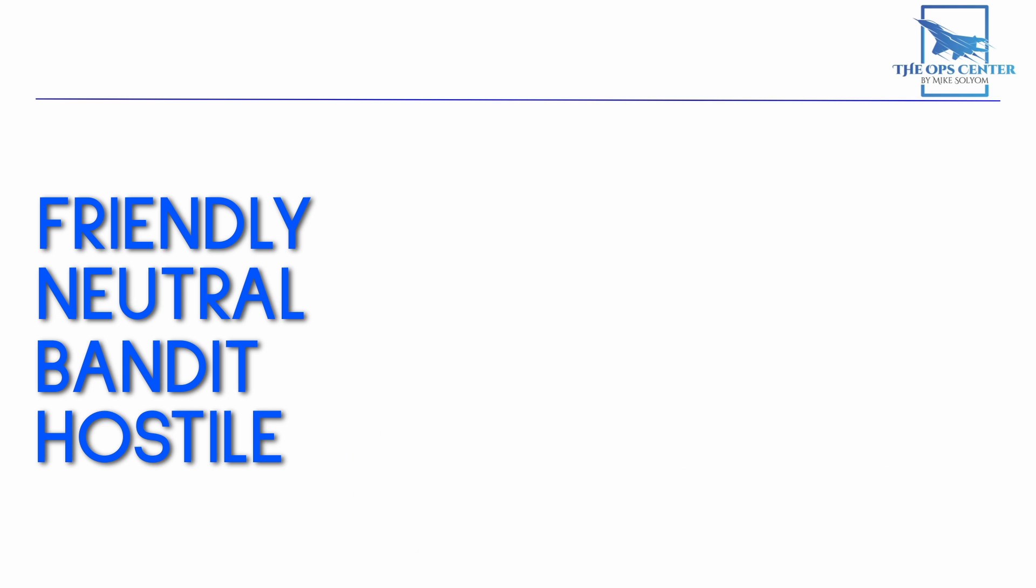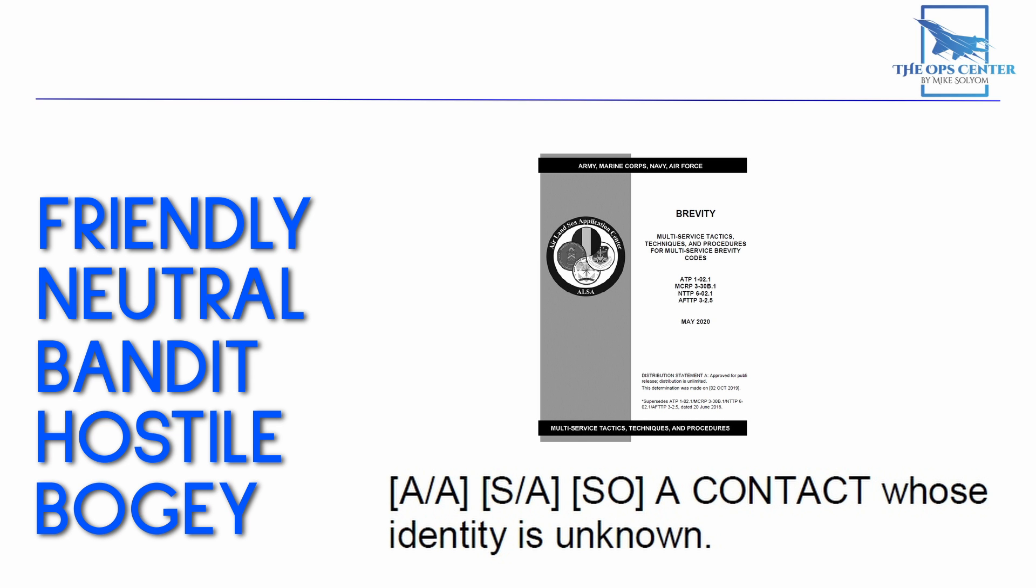When a contact can't be PID'd using electromagnetic or procedural means, it's going to be labeled as a bogey. This simply means it's unknown and needs further investigation. So how do we turn that bogey into a hostile that can be fired on? This is where the ROE matrix comes into play.